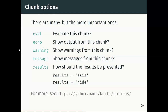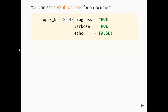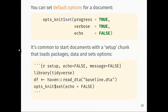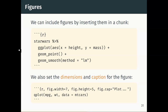Chunks have options and they are important. Common ones: eval (whether to evaluate the chunk), echo (whether to show the code), warning and message (whether to show those). You can set defaults in your document — early on you might set that by default all code is hidden and all warnings are hidden. It's common to start a document with a setup chunk where you load packages, load data, and define options for subsequent chunks.